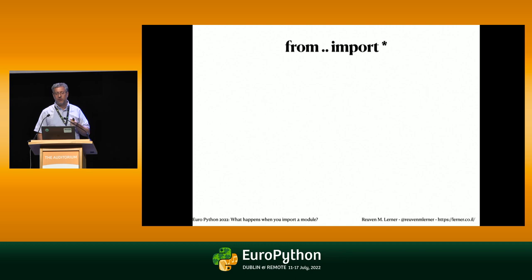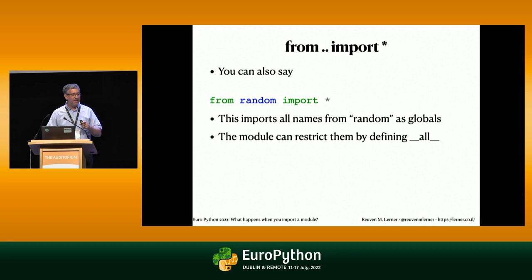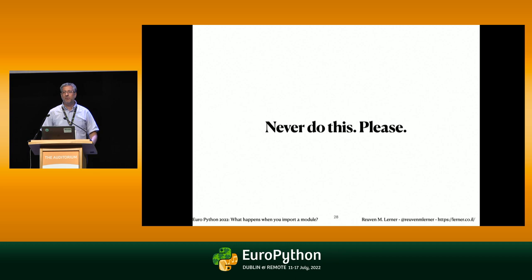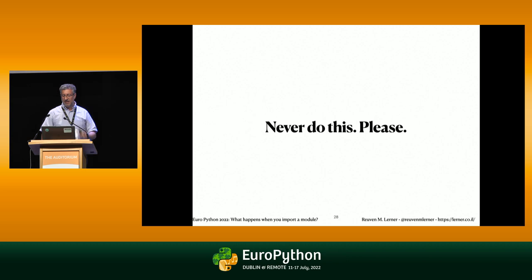There's one last version you might be familiar with: 'from import *'. This imports all the names from random as globals into your current namespace — well, not all necessarily, some won't be loaded if they're not in __all__. My advice about this is very simple: never do it. It's a really, really bad idea. It's like saying the world would be simpler without surnames — simpler in some ways, more confusing in others. Don't do it.